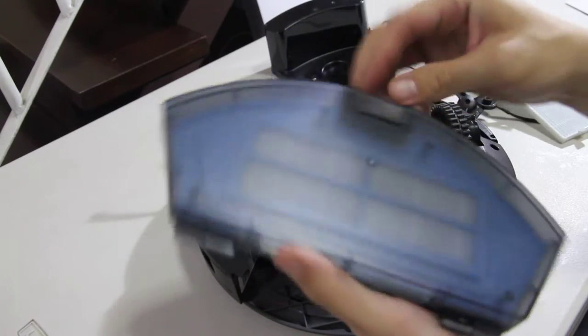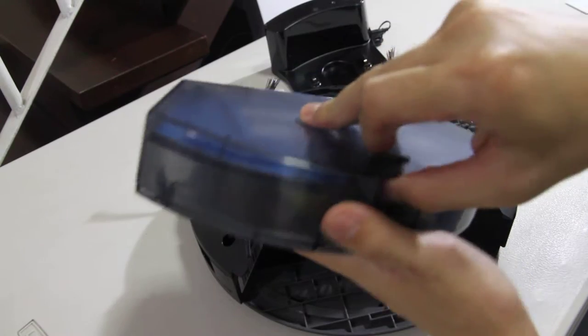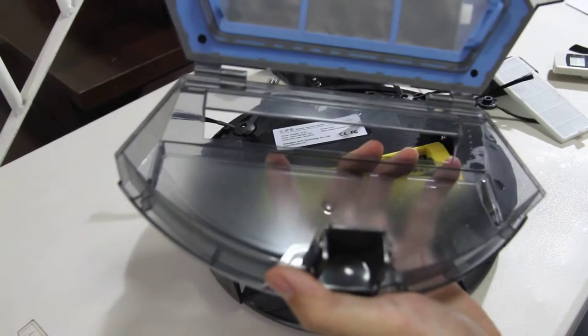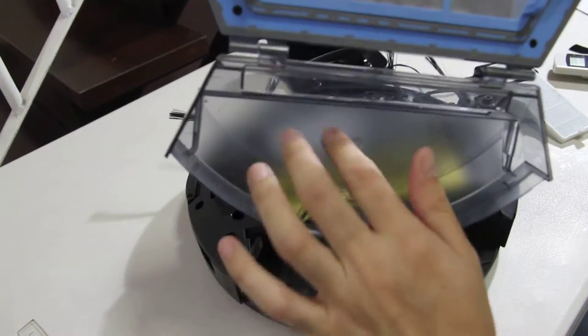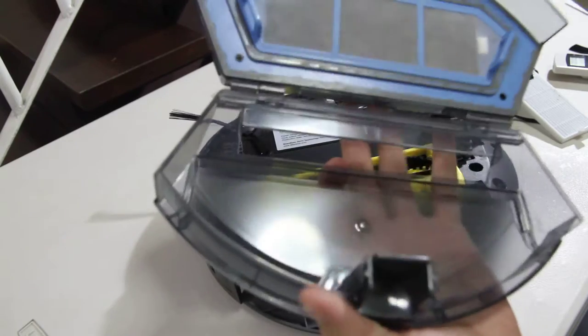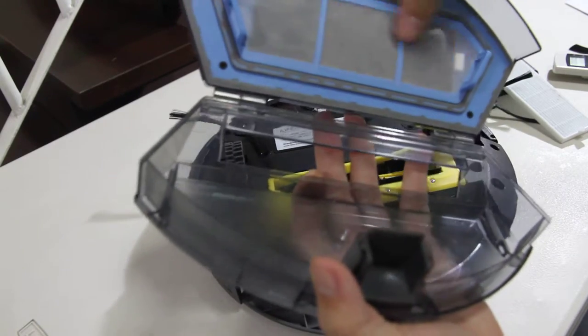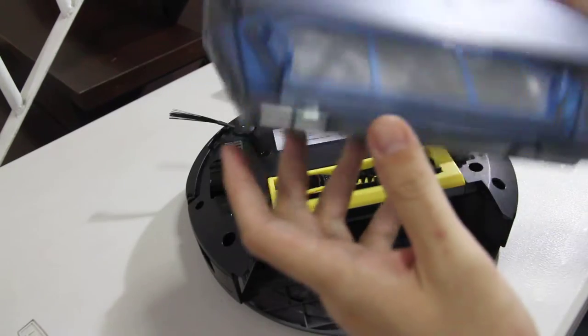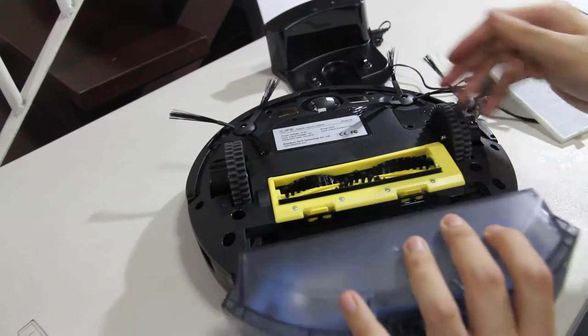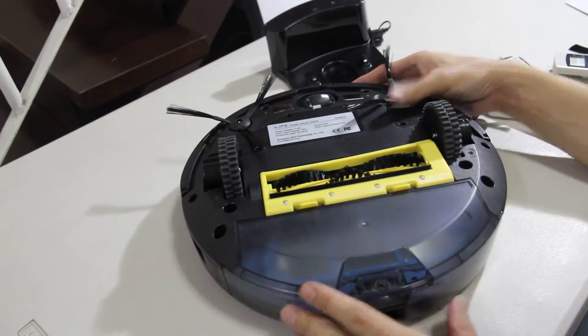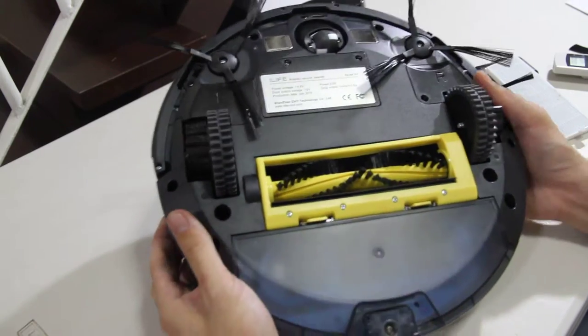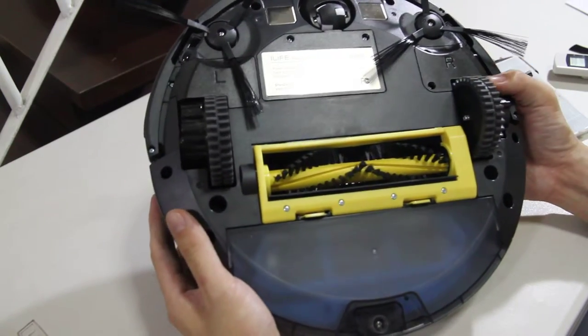And it has a HEPA filter. So when you open this, you just dump the dirt here. And this is the filter, this is where the filter resides. And it's quite a decent-sized dirt bin.